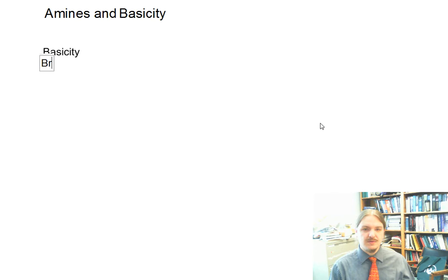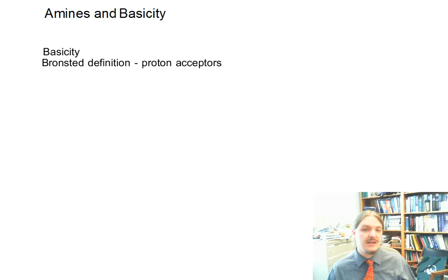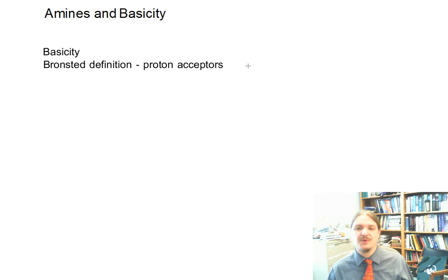But basicity, if you're thinking about the Bronsted definition, we're looking at things that are proton acceptors, and that's the kind of definition I'm going to end up using here. The Lewis definition, things that are electron pair donors, is equally valid and everything that can accept a proton is an electron pair donor.